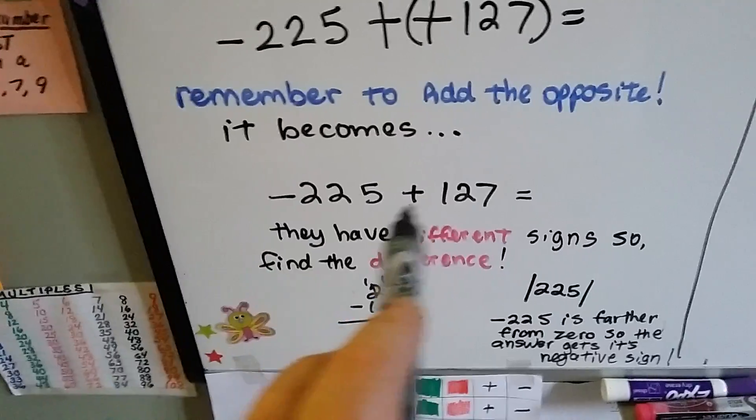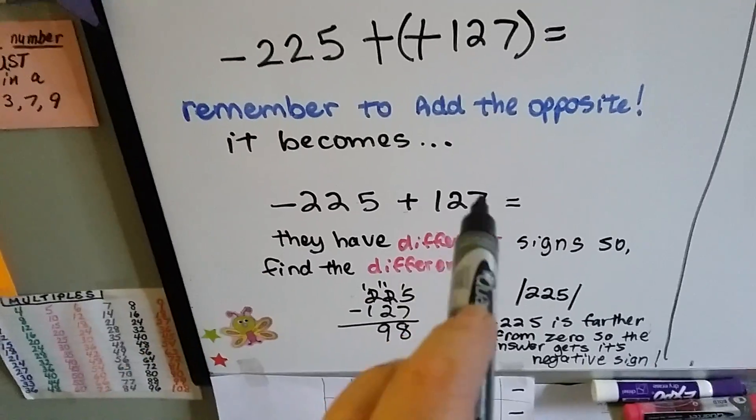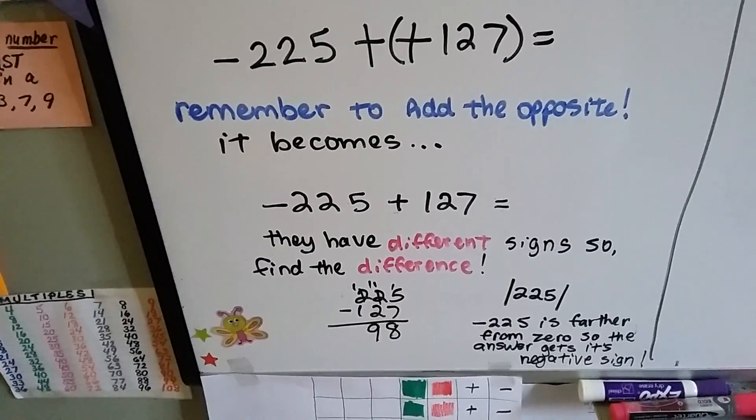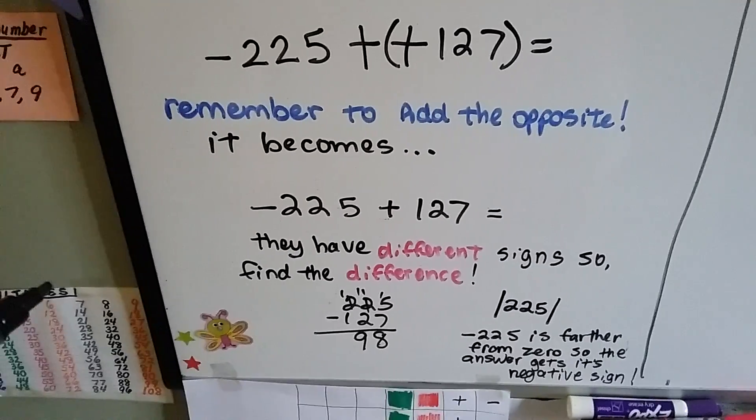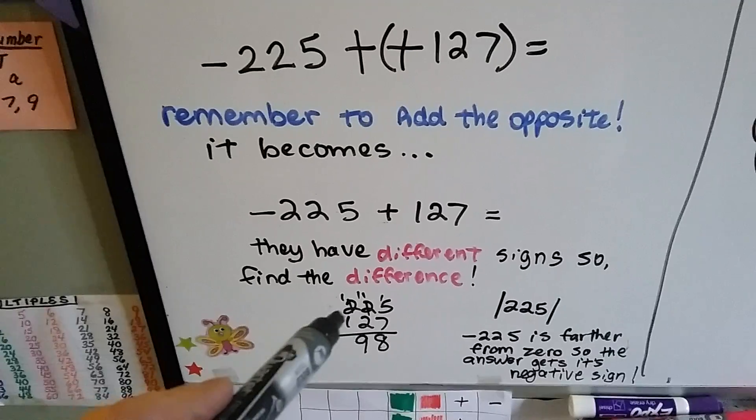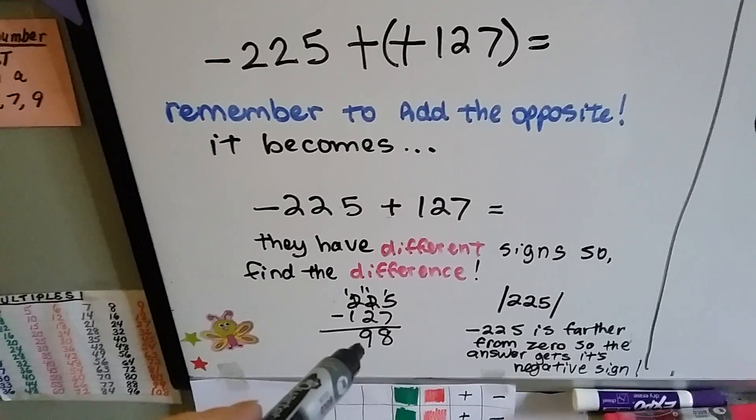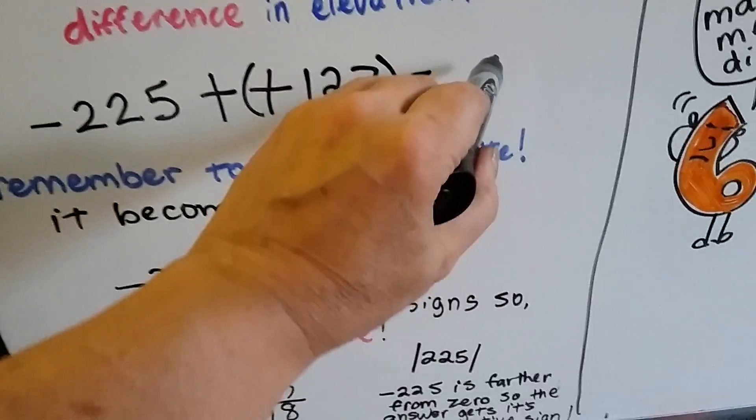And we end up with negative 225 plus a positive 127. Well, now the signs are different. They have different signs. So if you know the rule from the previous videos, when they have different signs and we're adding them, we find the difference. So 225 take away 127 is 98. The difference is 98.